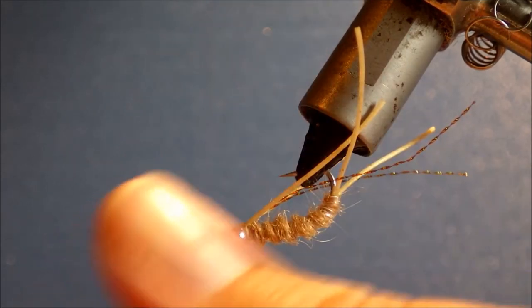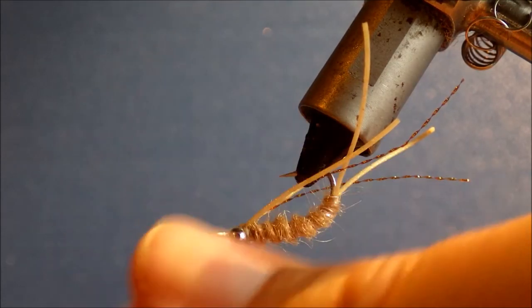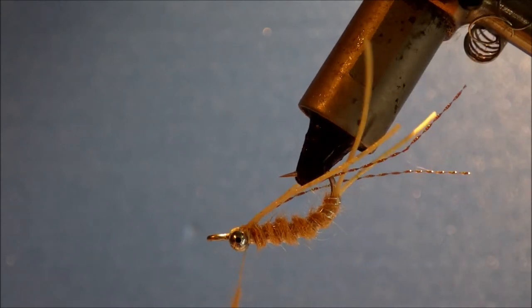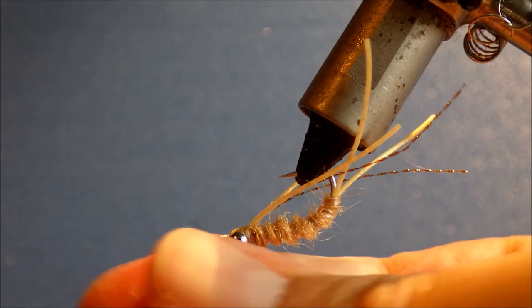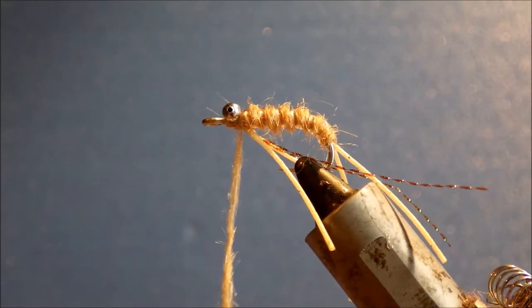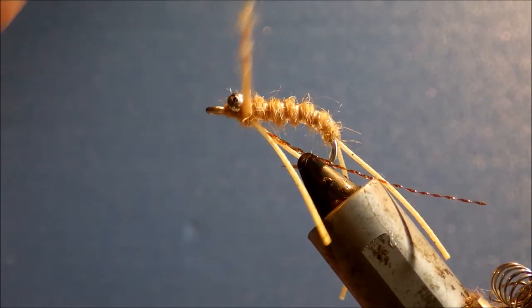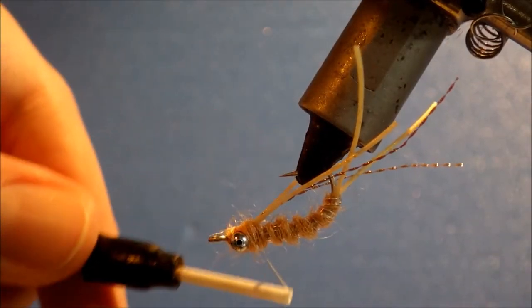And then the last stage is just to put a bit more dubbing around the bead chain to create a wee head. Again don't be shy. Feel free. You can get plenty on. So around, between the eyes. Build it up. Make sure you've covered everything.